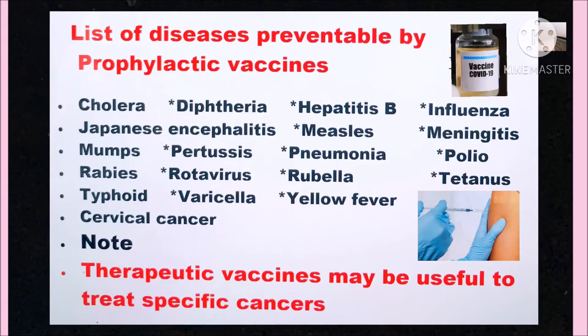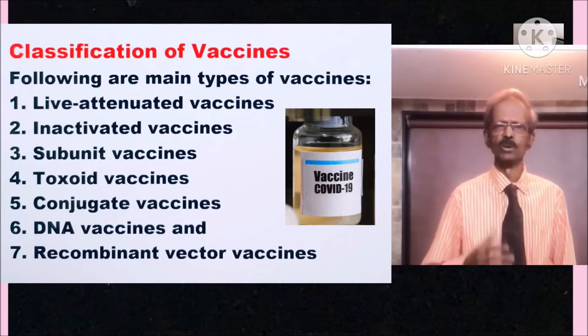This is the list of various diseases preventable by prophylactic vaccines: cholera, diarrhea, hepatitis B, influenza, Japanese encephalitis, measles, meningitis, mumps, pertussis, pneumonia, polio, rabies, rotavirus disease, rubella, tetanus, typhoid, varicella, yellow fever, and cervical cancer. Therapeutic vaccines may also be useful to treat specific cancers.